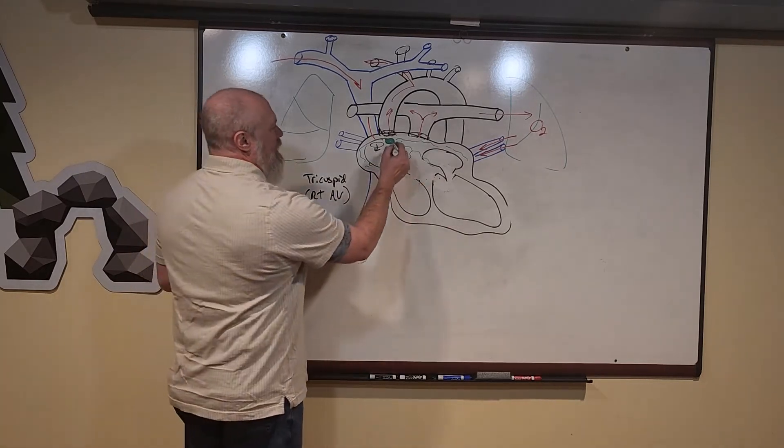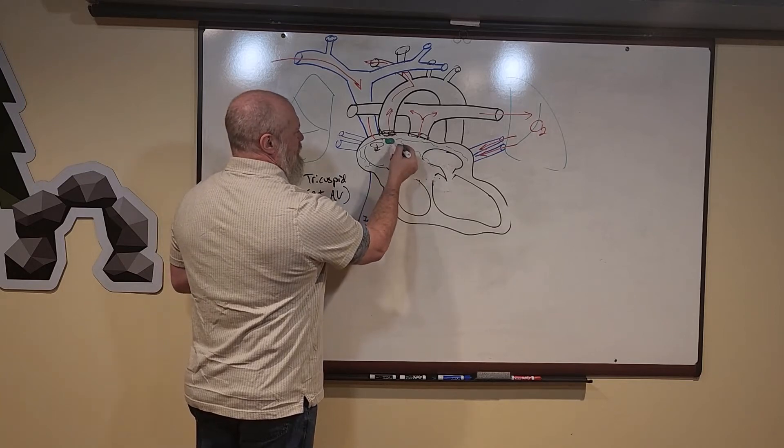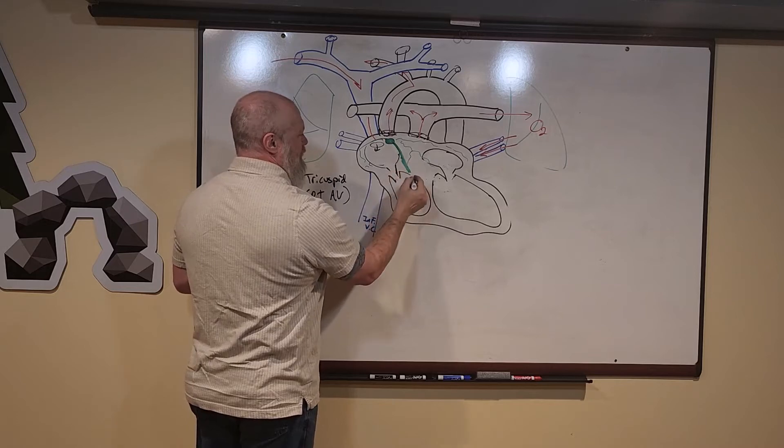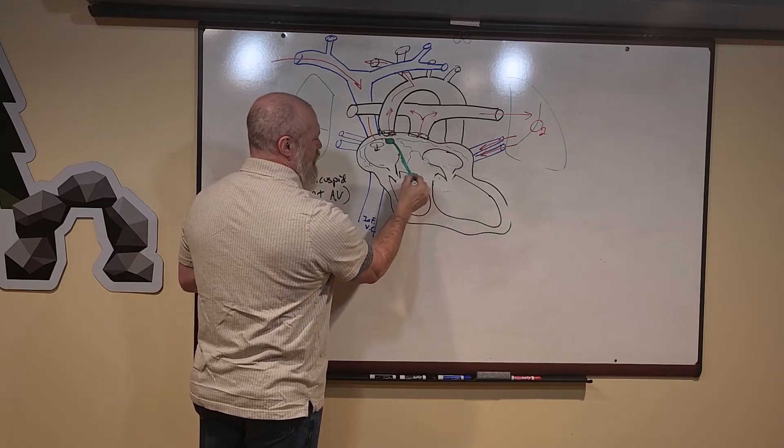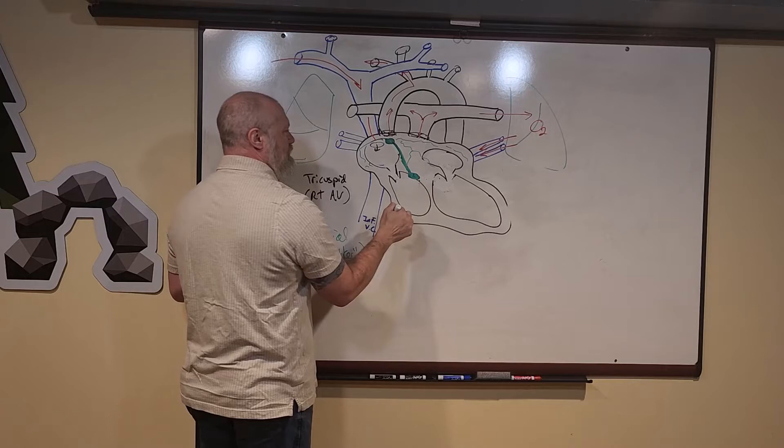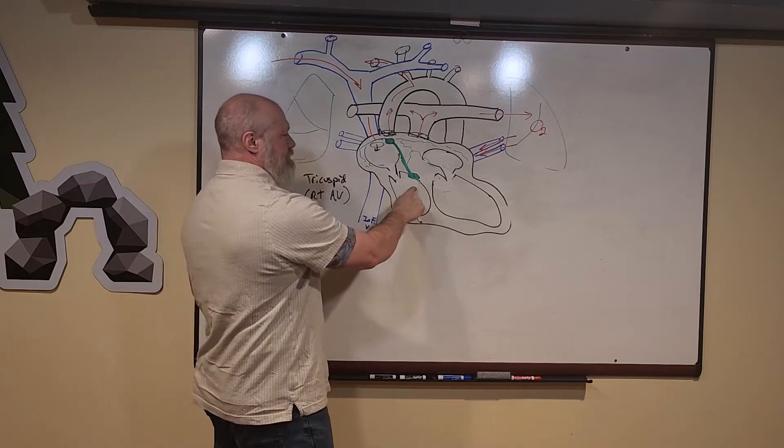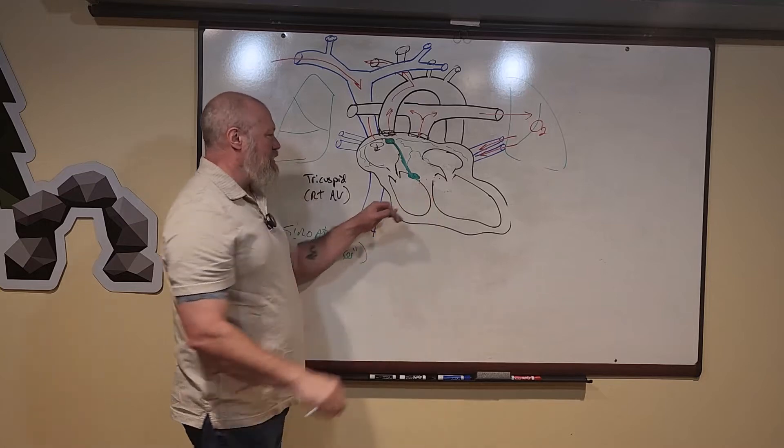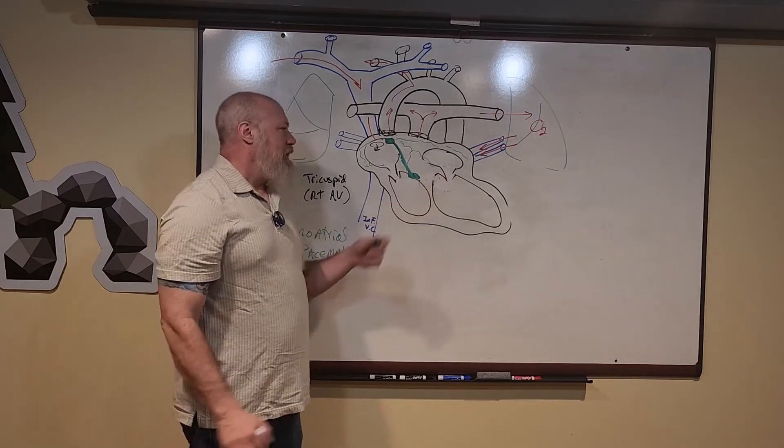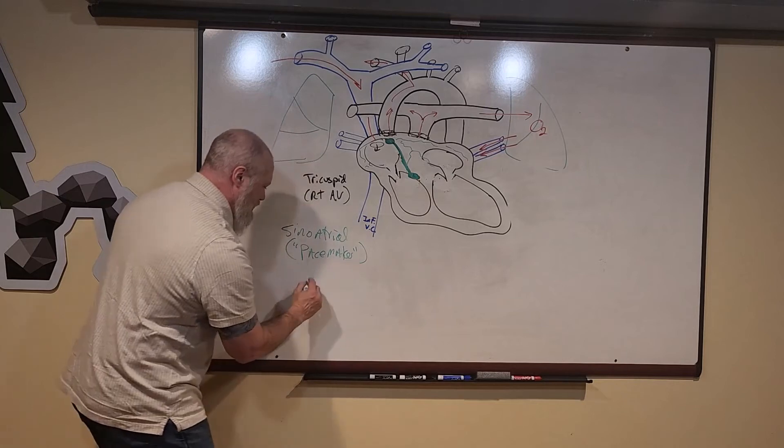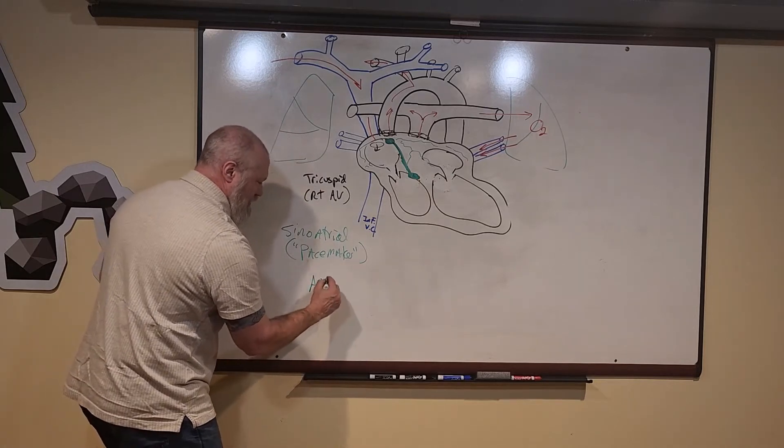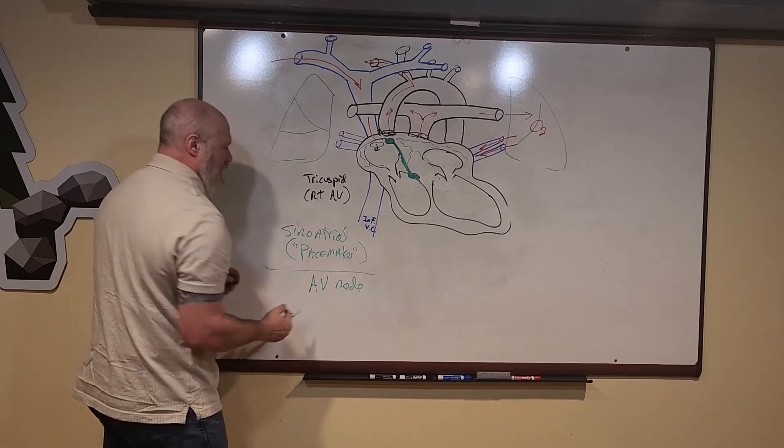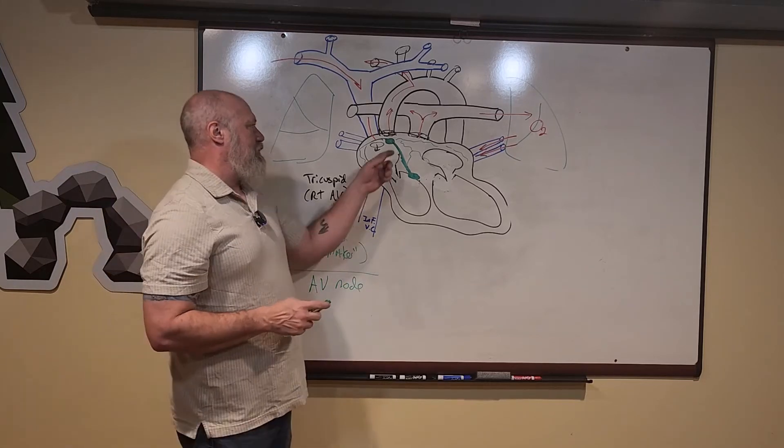The sinoatrial node also has a little bundle of fibers that's going to head down to another little node of depolarizing tissue. That's at the base of the septum that runs between the right and left ventricles. This is called the atrioventricular node, or just AV node. The AV node is going to receive that depolarizing signal from the SA node.